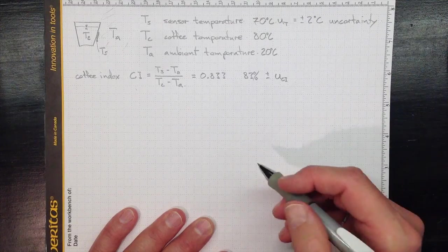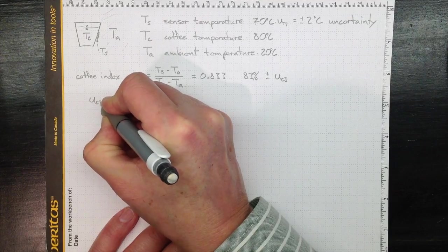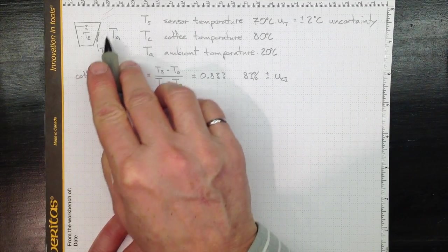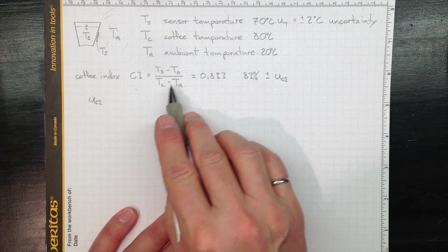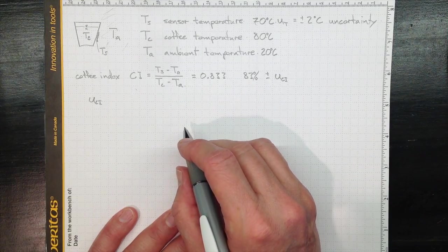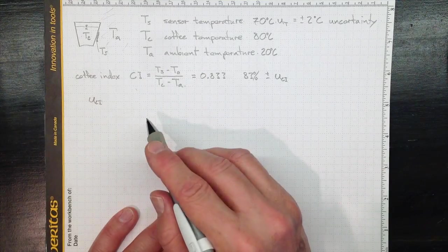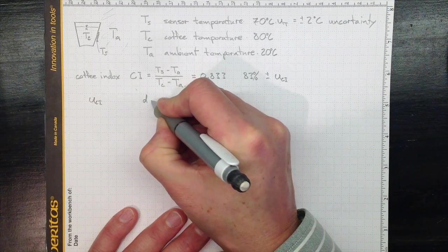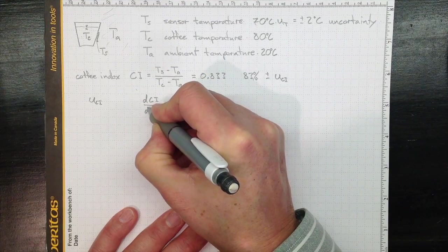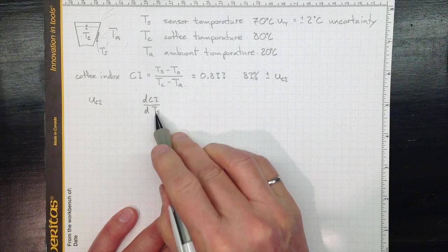It's got to be some uncertainty value and we need to figure out what it is. Well, studying from our textbook tells us that the uncertainty in the coffee index depends on the uncertainty in each of the three temperature measurements and then the degree to which the coffee index depends on each of those temperature measurements. So if I see a small change in the sensor temperature, then I'm interested in how much the coffee index changes with respect to a change in the sensor temperature, DCI, DTS.